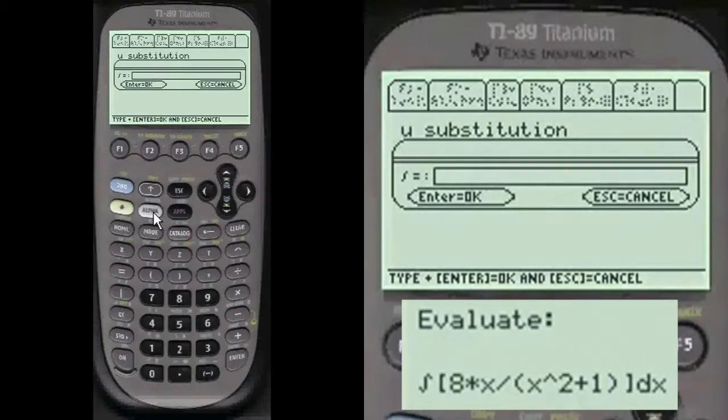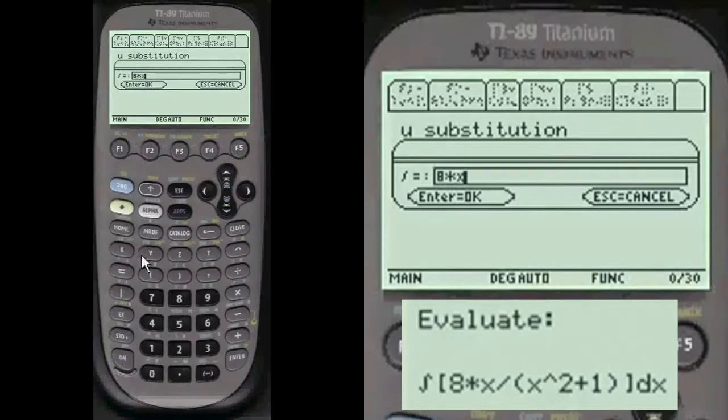And we're going to enter our function. You have to press alpha before you enter anything into my entry lines in my programs. Alpha 8 times x divided by parentheses x squared plus 1.